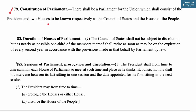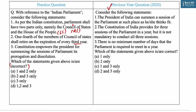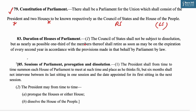As per Article 79 of the Constitution, which talks about the constituents of Parliament, it says: 'There shall be a Parliament for the Union which shall consist of the President, two houses known respectively as the Council of State (Rajya Sabha) and the House of the People (Lok Sabha).' So our first statement is incorrect, which says it consists of only two parts, whereas the Constitution says it includes three entities — the President, the Council of State, and the House of the People.